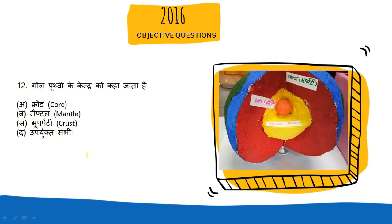Next question: Gol prithvi ke kendra ko kaha ja sakta hai. To jo iska correct answer hai woh hai Core. Jo prithvi ka kendra hota hai use hum Core kehte hain. Yeh figure mein bhi aap dekh sakte hain — jo prithvi ka kendra hai use bolte hain Core, jo sabse upar ka bhaag hai jahan par hum log chalte hain use bolte hain Crust, aur beech wala bhaag Mantle kehlata hai.